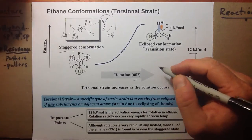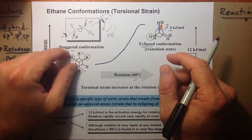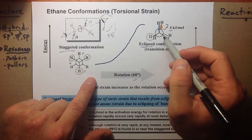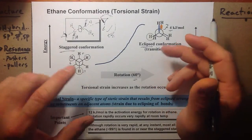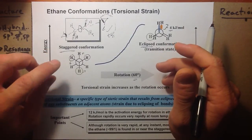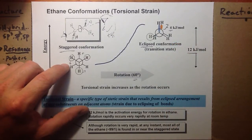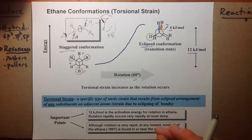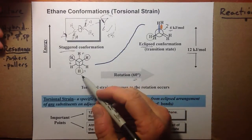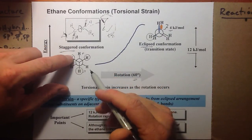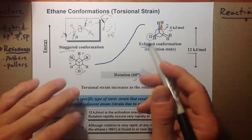We relieve this strain by continuing to rotate. There are three eclipsed orientations and three staggered conformations for any ethane molecule. The 12 kJ/mol is the activation energy for rotation of ethane. Even with that barrier, at room temperature we surmount that energy and have rapid rotation. But at any given time, more than 99% of ethane molecules will be in the staggered conformation, moving through the high-energy eclipsed conformation very quickly.